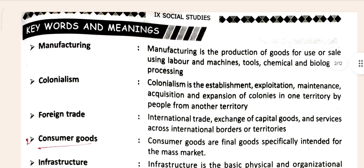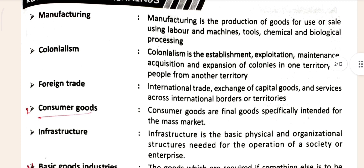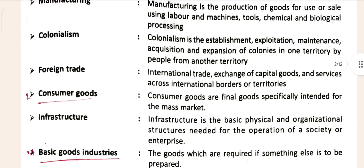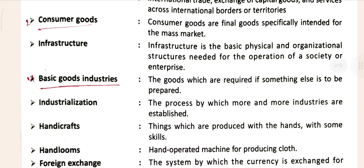From here our keywords section is starting. There are a lot of keywords given. I have already mentioned their position marked in red. You can see - this is 'consumer goods', which is our second keyword according to your textbook. If you want to read more keywords, you can easily note them from here.